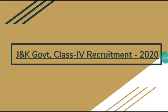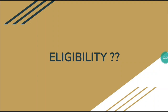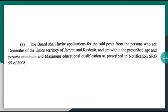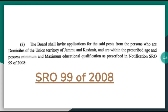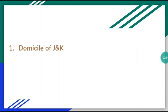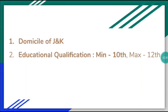Now we will see that the J&K government has referred JKSSB Class 4 jobs. We will see some details about that. Before applying for any job, the first question that comes to mind is whether we are eligible. So what is the eligibility criteria? As written in the notification, the first point is that you have to be a domicile of the Union Territory of J&K. In addition to that, age and educational qualification criteria will be as per SRO 99 of 2008.